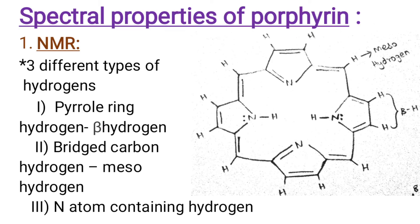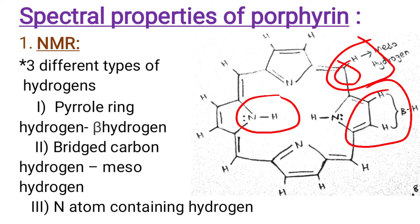Next we will discuss spectral properties of porphyrin ring. First is NMR spectrum for the porphyrin ring. We will have three sets of non-equivalent protons. First, the pyrrole ring hydrogen, which is called beta hydrogen. Second, the bridged carbon hydrogen, known as meso hydrogen. Third, the center nitrogen containing hydrogen. So three signals appear. Here this one is beta hydrogen, this is the carbon bridged hydrogen called meso hydrogen, and finally the nitrogen attached hydrogen. So we get three sets of protons and three signals.